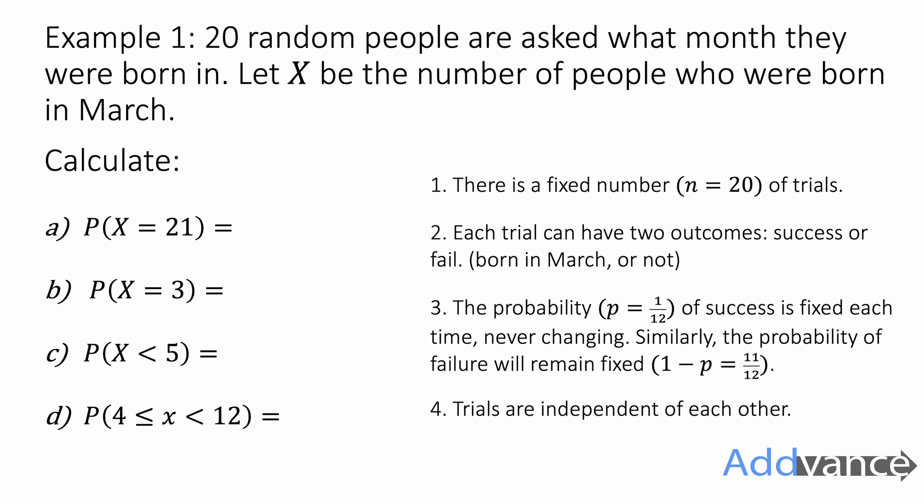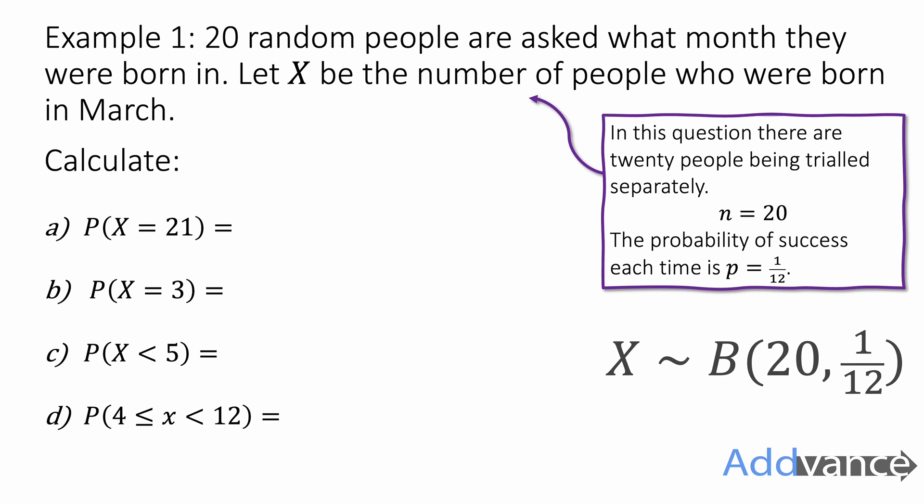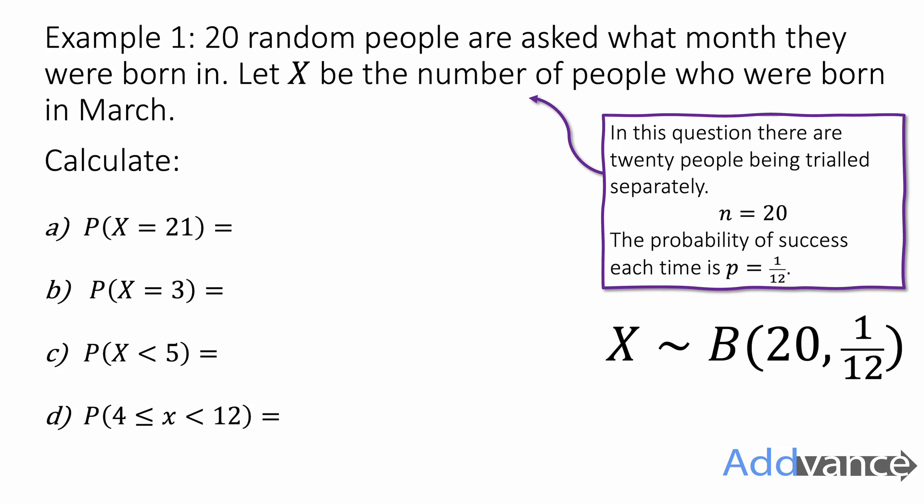The probability of success is one out of 12 because there is one month we care about out of 12. Each time that probability is exactly the same because each time you're asking a new person, the probability resets — equal probability of being born in March or not. The probability of not being born in March is 11 out of 12, and trials are independent. So x is distributed binomially for n equals 20 trials and probability of success p equals 1 out of 12.